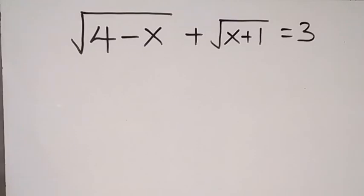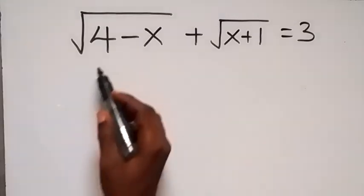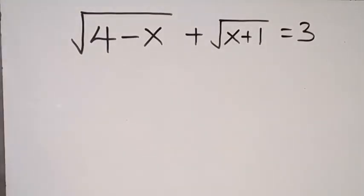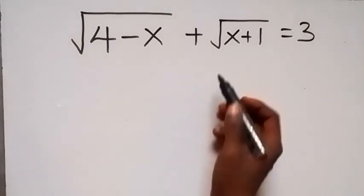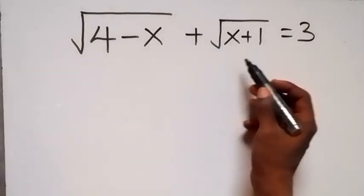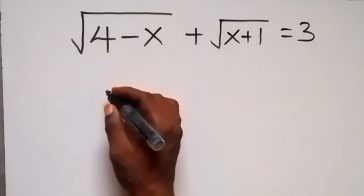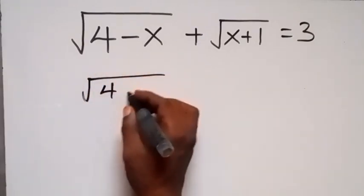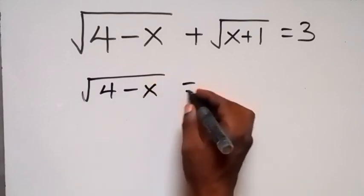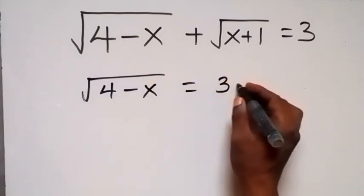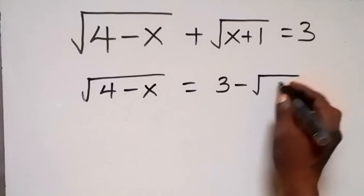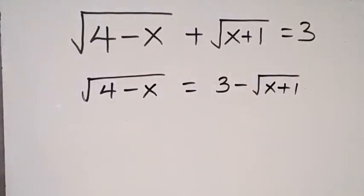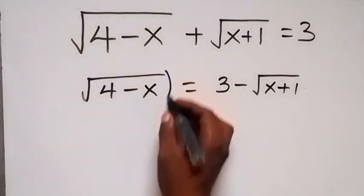Hello, you are welcome. How to solve this problem: root(4 minus x) plus root(x plus 1) equals 3. From here, let's separate root(x plus 1) to the other side, so this becomes root(4 minus x) equals 3 minus root(x plus 1). In the next step, let's take the square on both sides.